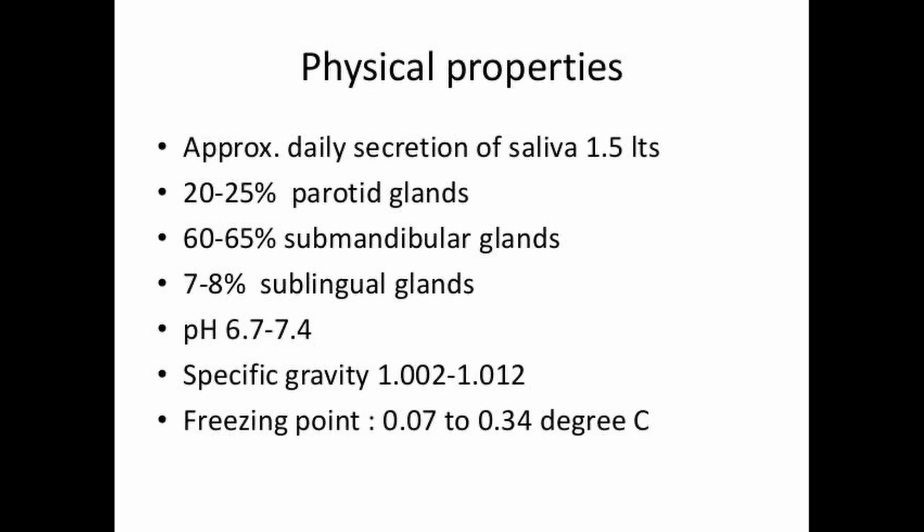Now we discuss the physical properties of saliva. The daily secretion of saliva is about 1.5 liters. The parotid gland contributes 20 to 25 percent, the submandibular gland 60 to 65 percent, and the sublingual gland 7 to 8 percent. The pH of saliva is 6.7 to 7.4, specific gravity is 1.002 to 1.012, and the freezing point is 0.07 to 0.34 degrees Celsius.